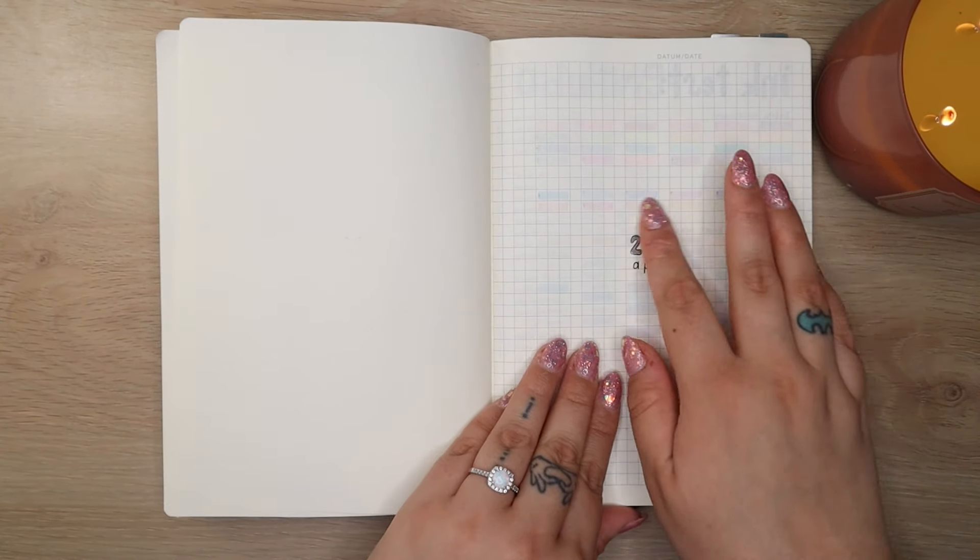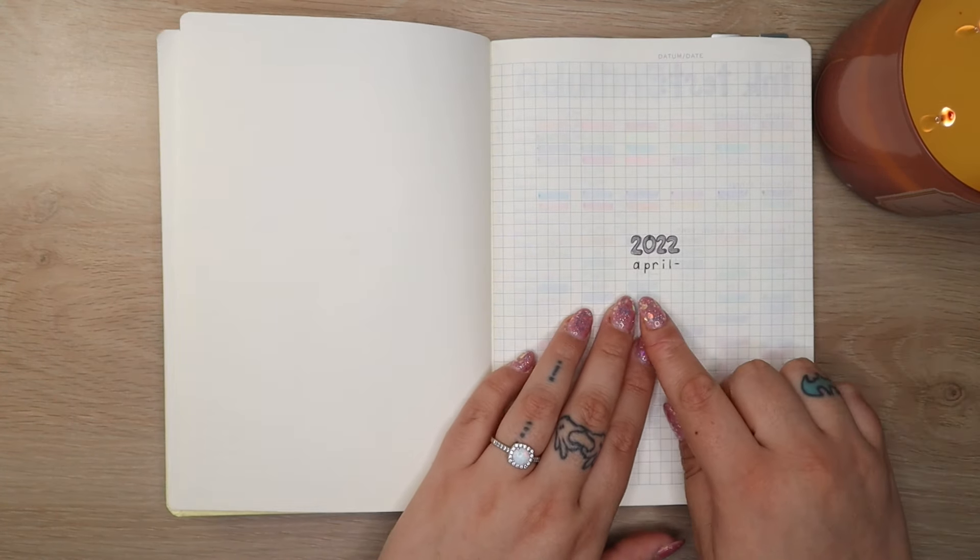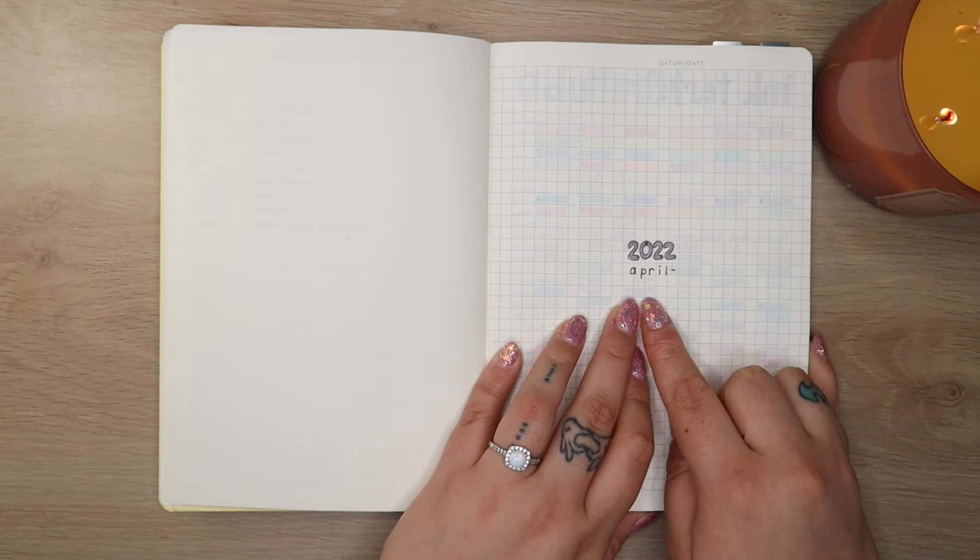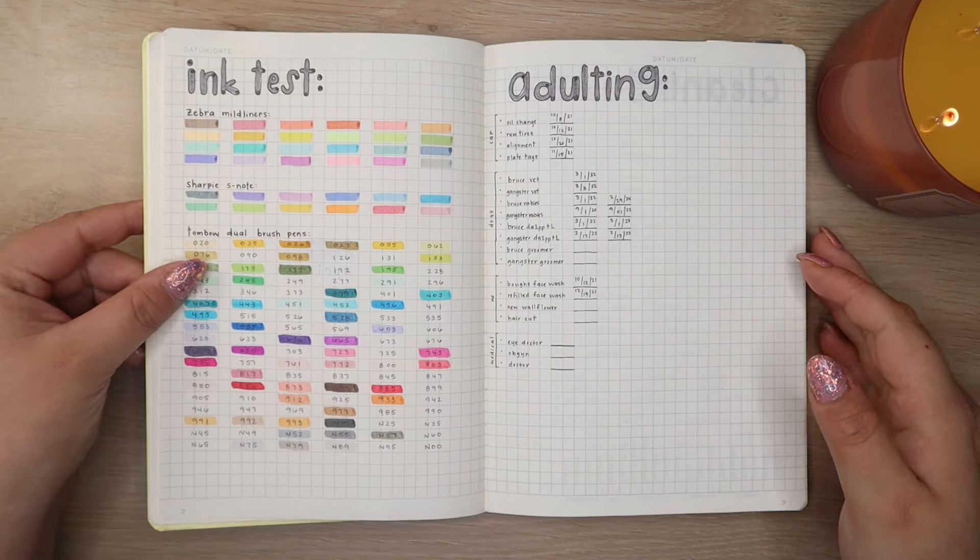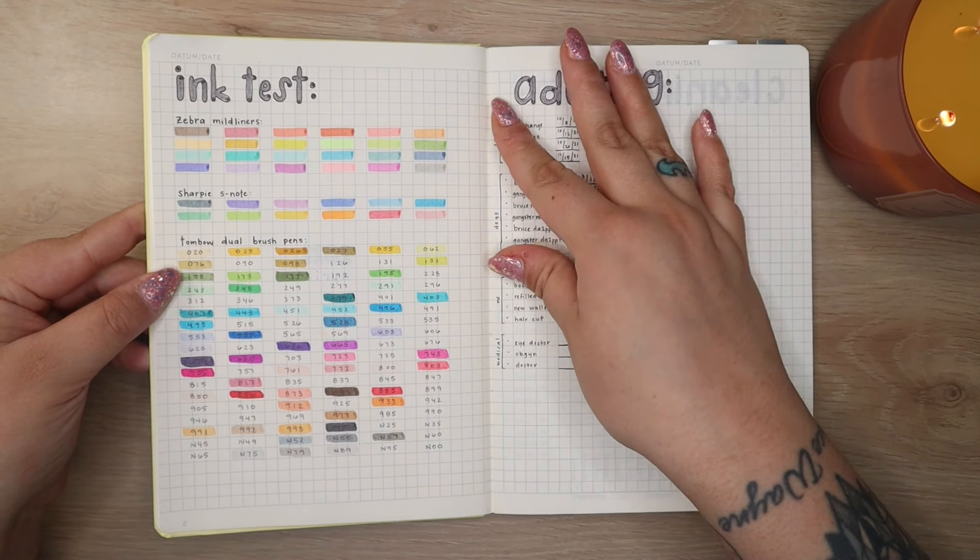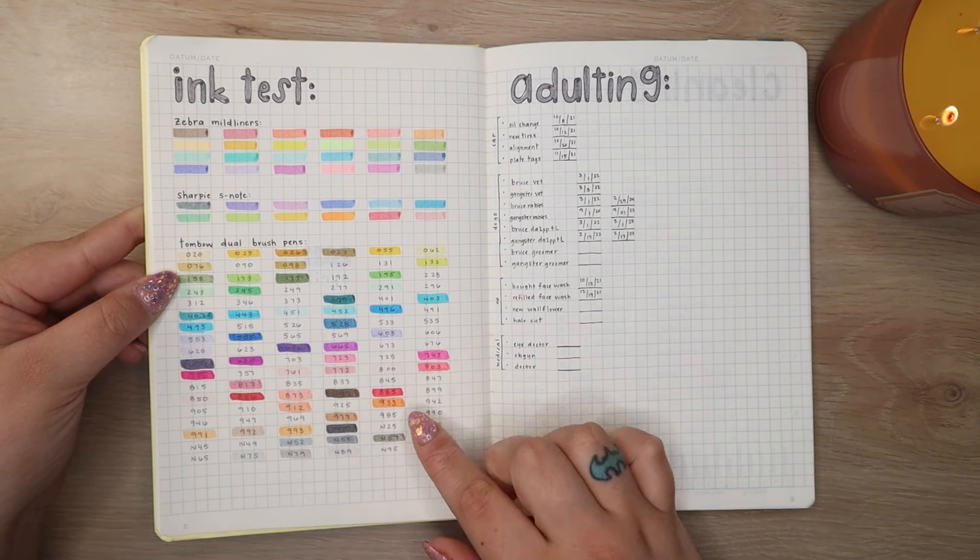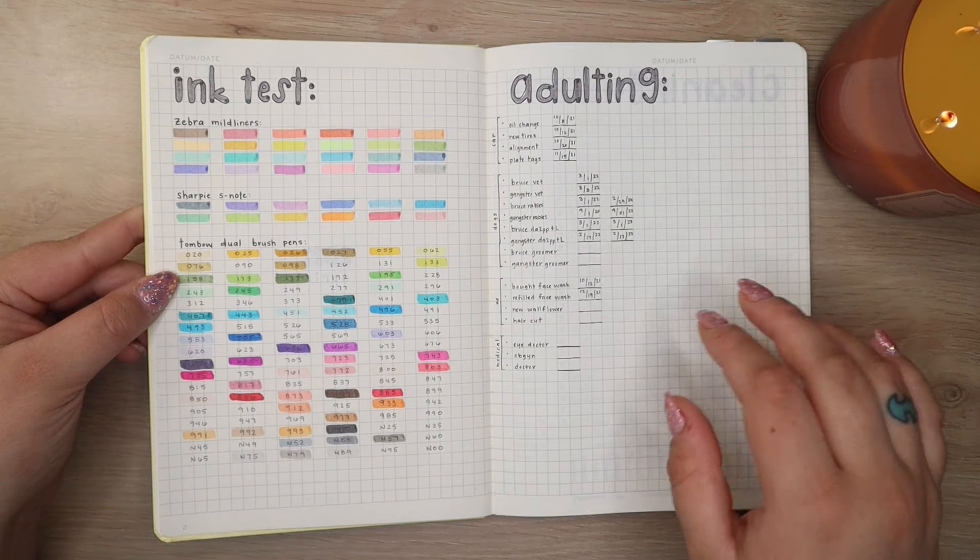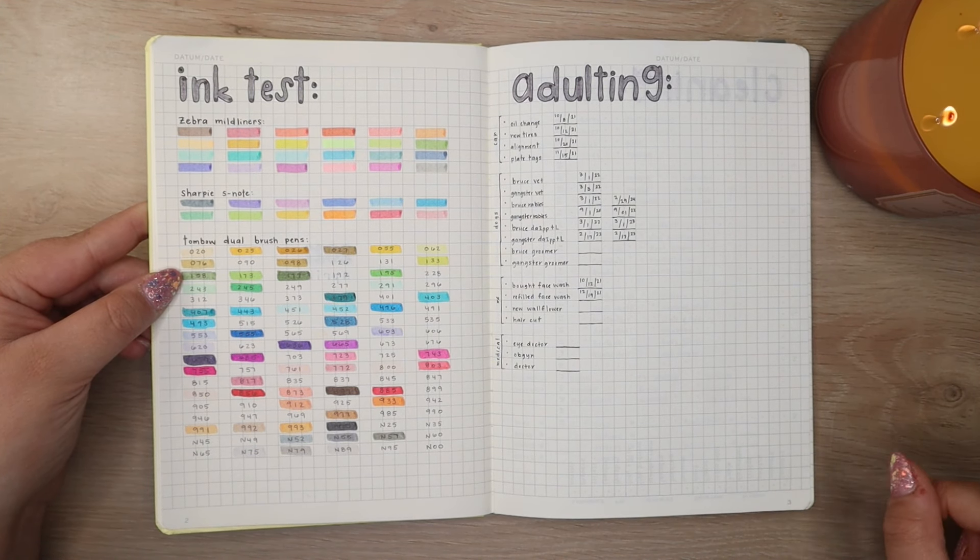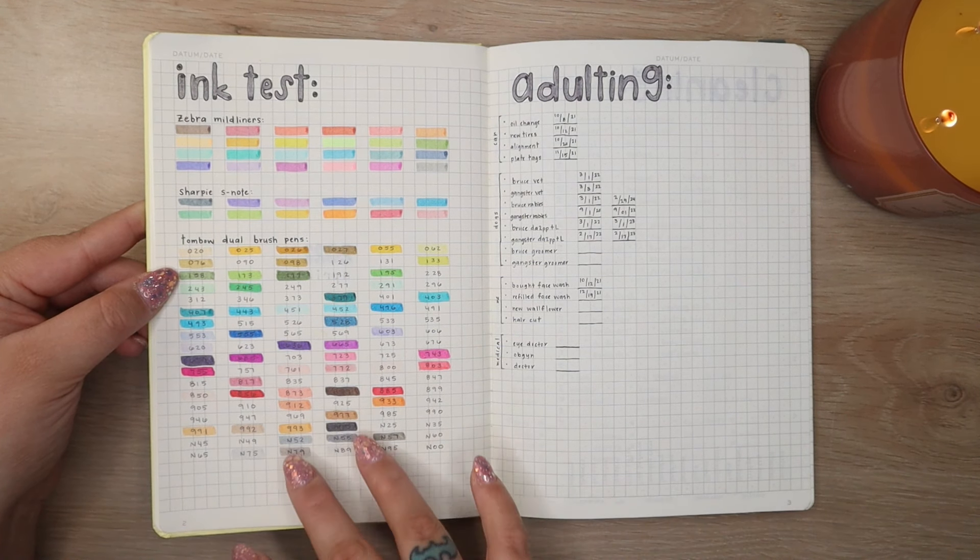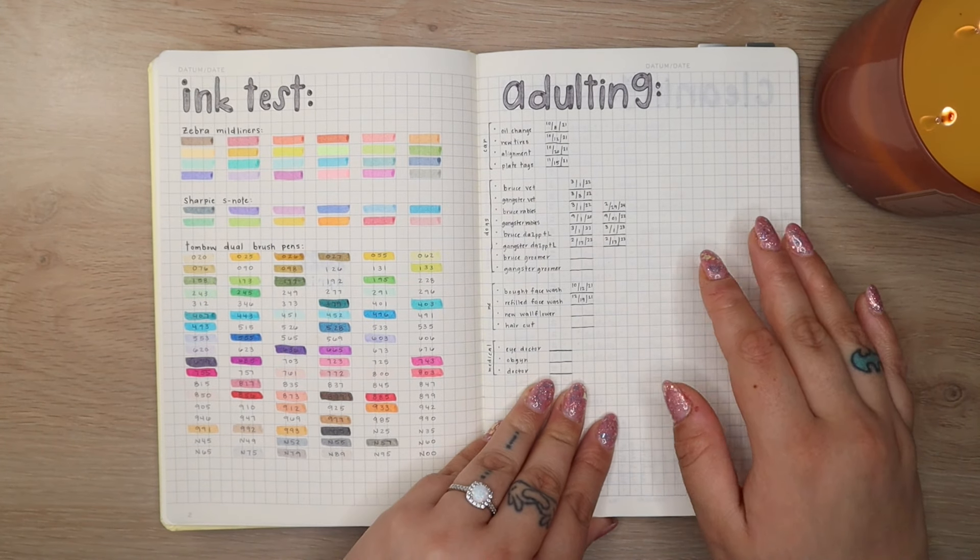Then we have my yearly cover page. This is again extremely simple. 2022. I was going to start my notebook in April. I opted to start it in the second week of March so I just left it. Then we have my ink test page. I wanted to see how the Zebra Mildliners Sharpie S Notes and all of my Tombow Dual Brush Pens would work on this paper. This paper is not a bright white color. It is kind of a light creamy kind of color and seeing how these markers show up on this paper is good for future reference.